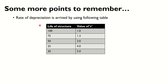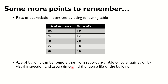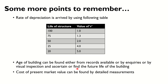The rate of depreciation is arrived at using the following table: if the life of the structure is 100 years, the depreciation rate is 1%; if 75 years, it is 1.3%; if 50 years, 2.0%; if 25 years, 4%; and if 20 years, it is 5%. The age of the building can be found from records, inquiries, or visual inspection to ascertain the future life of the building.